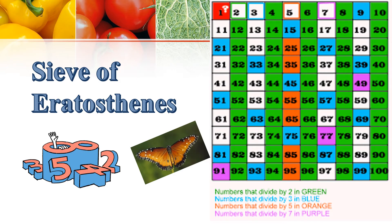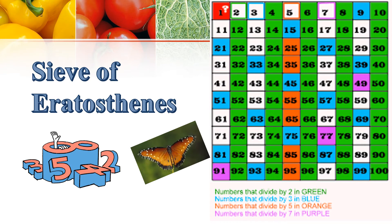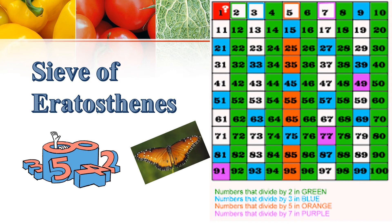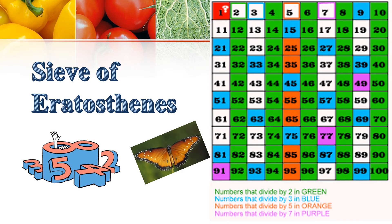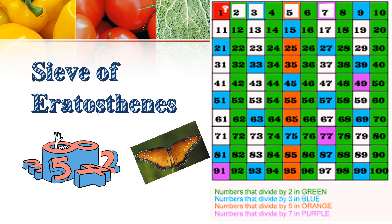The next number is 2, which is a Prime Number. So we put a green box around it and color all numbers divisible by 2 in green. The next number is 3, which is also a Prime Number — we put a blue box around 3 and color all numbers divisible by 3 in blue. Similarly, we continue up to 10, coloring all boxes divisible by each number. The numbers not divisible remain in white. In the first row, 2, 3, 5, and 7 are the Prime Numbers. In the second row, 11, 13, 17, 19 are Prime Numbers, and so on.